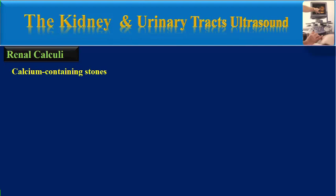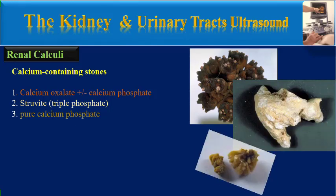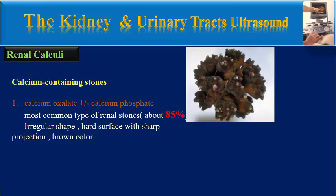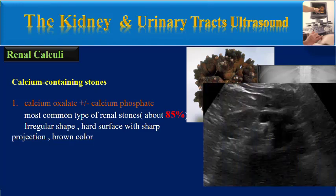Calcium-containing stones include calcium oxalate, calcium phosphate, struvite or triple phosphate, and pure calcium phosphate stones. Calcium oxalate stones are the most common type of renal stones, about 85%. They have an irregular shape, hard surface with sharp projections, and brown color. If a calcium oxalate stone has moderate size and we take an abdominal x-ray with good bowel preparation, we can detect it in plain x-ray, as seen here. We can also detect it by ultrasound, as you can see in this clip.